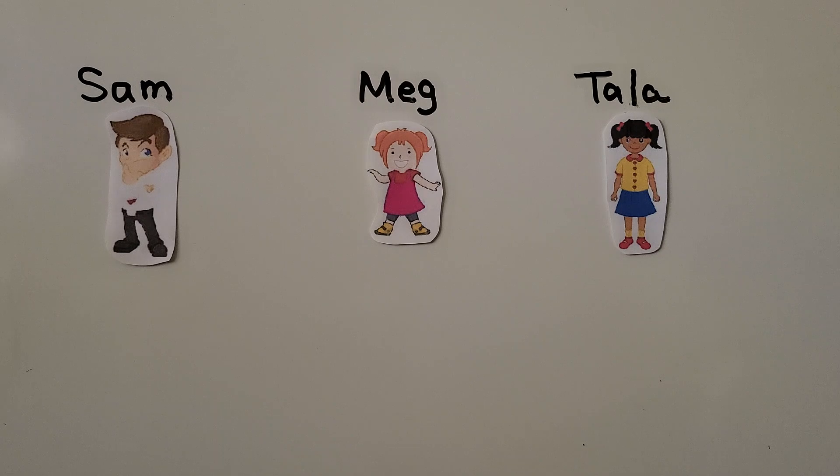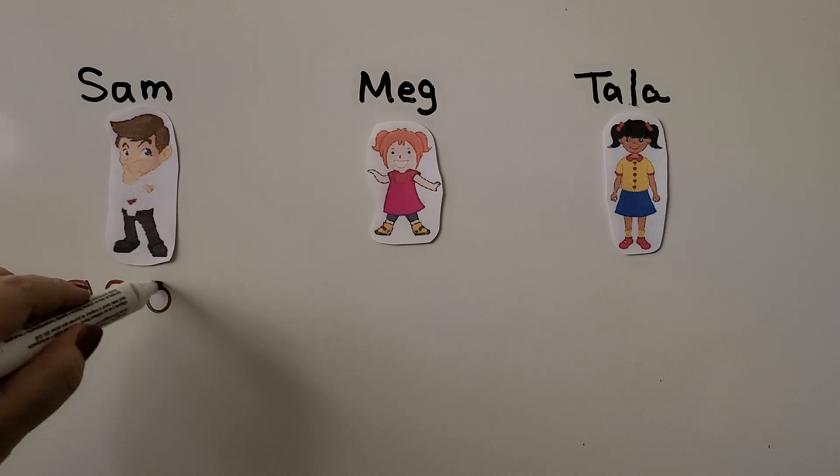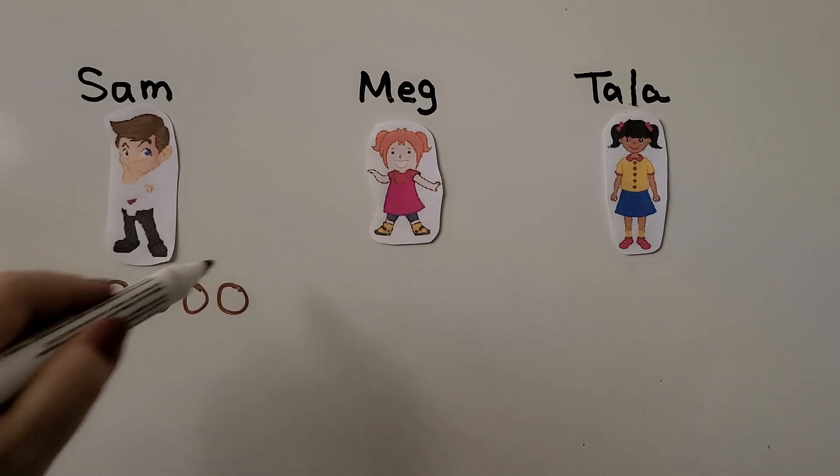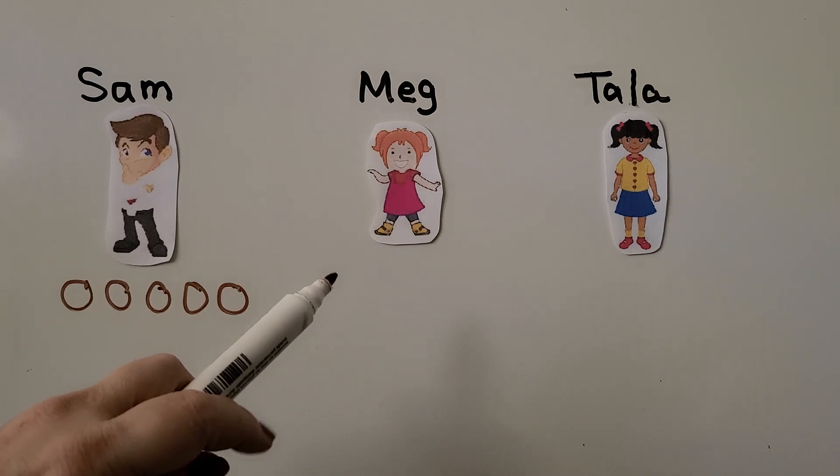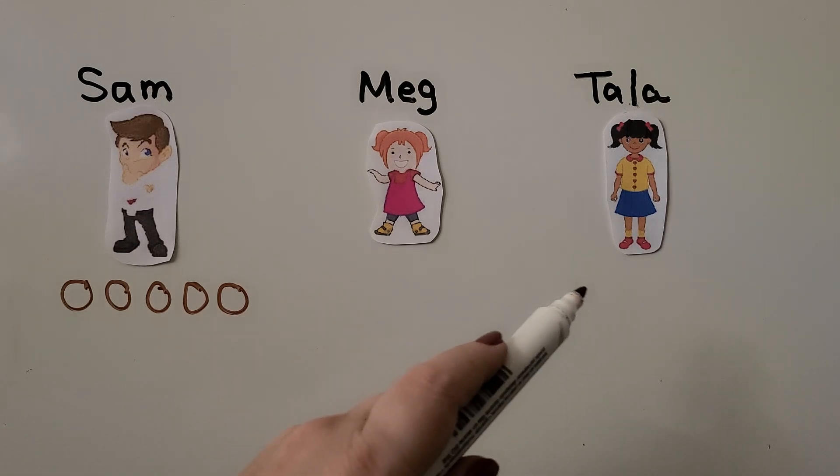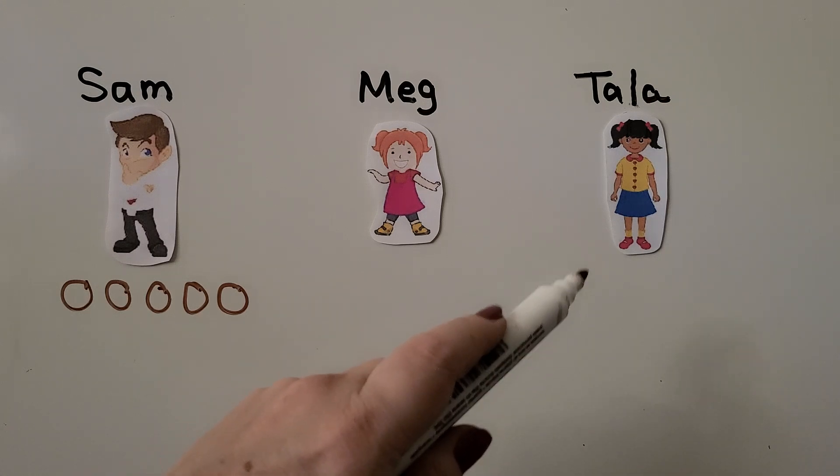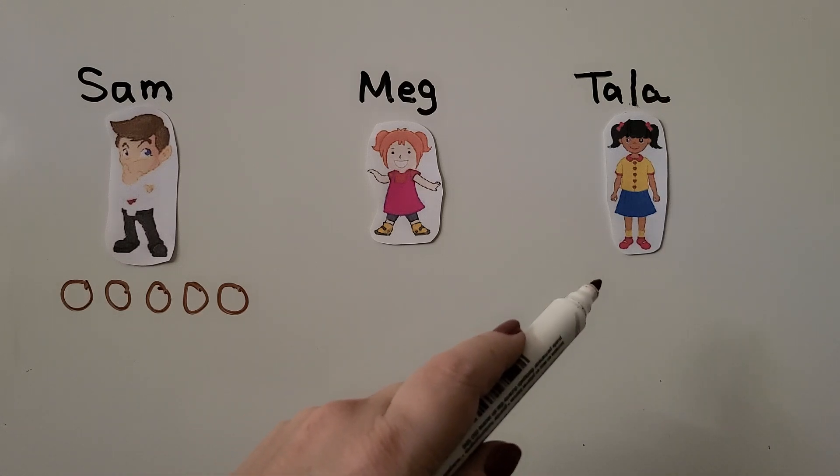Well first, we need to figure out which numbers we need to solve the problem. Sam found 5. We can draw 5 counters. 1, 2, 3, 4, 5. And it did tell us that Meg found 3. And it said Tala found 1 less than Sam. And we need to know how many Tala found.